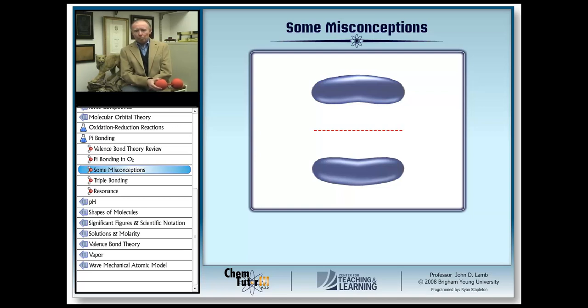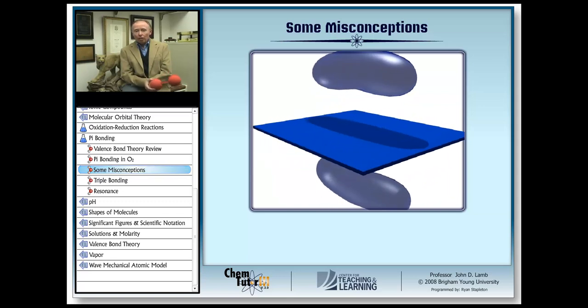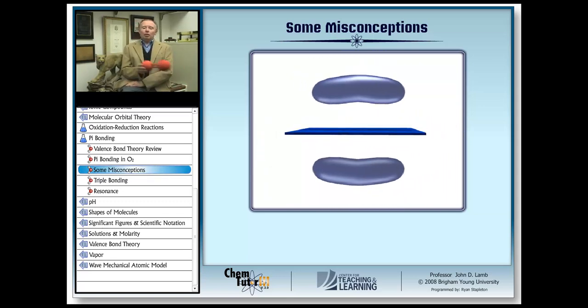So it stands to reason that the resulting pi bond will have a planar node that runs through the two atomic nuclei. And here's what that planar node looks like. Notice that this node is right smack dab in the bond axis. And that is one of the characteristics of a pi bond. It has a planar node in the bond axis.